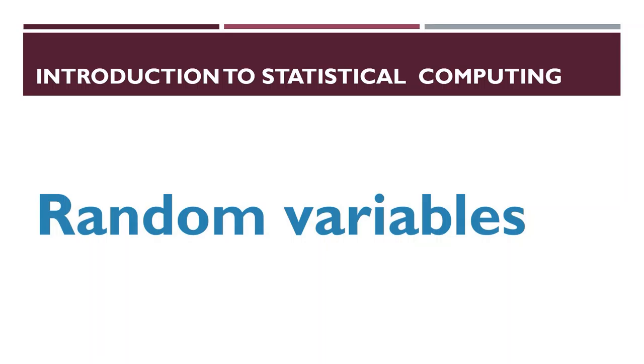The random variable term is used in statistical computing and data science, so it's related to data science. If you are learning this in your college, it has scope. How many types of random variables? What do you mean by a random variable and how many types?